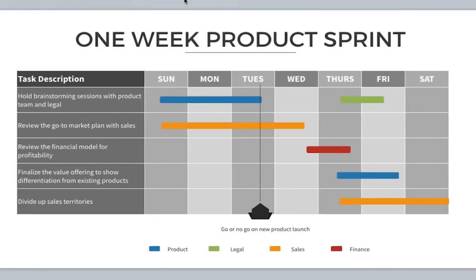Whether you use a flowchart or a Gantt chart, either is a solid upgrade over bulleted lists or text boxes that describe a project. I'm Andrew Childress for Envato Tuts Plus, and thanks for joining me.